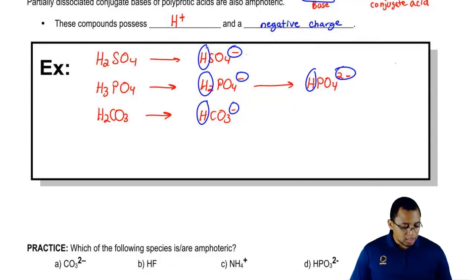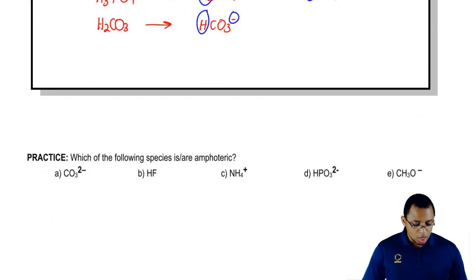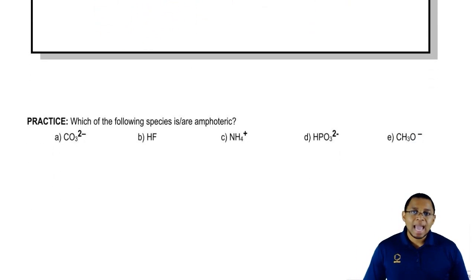Based on this definition, I want you guys to answer this following question. Which of the following species is amphoteric? Go through the definition of what an amphoteric or amphiprotic species is in order to answer this. Look to see, is there only one amphoteric species or is there more than one? Good luck.